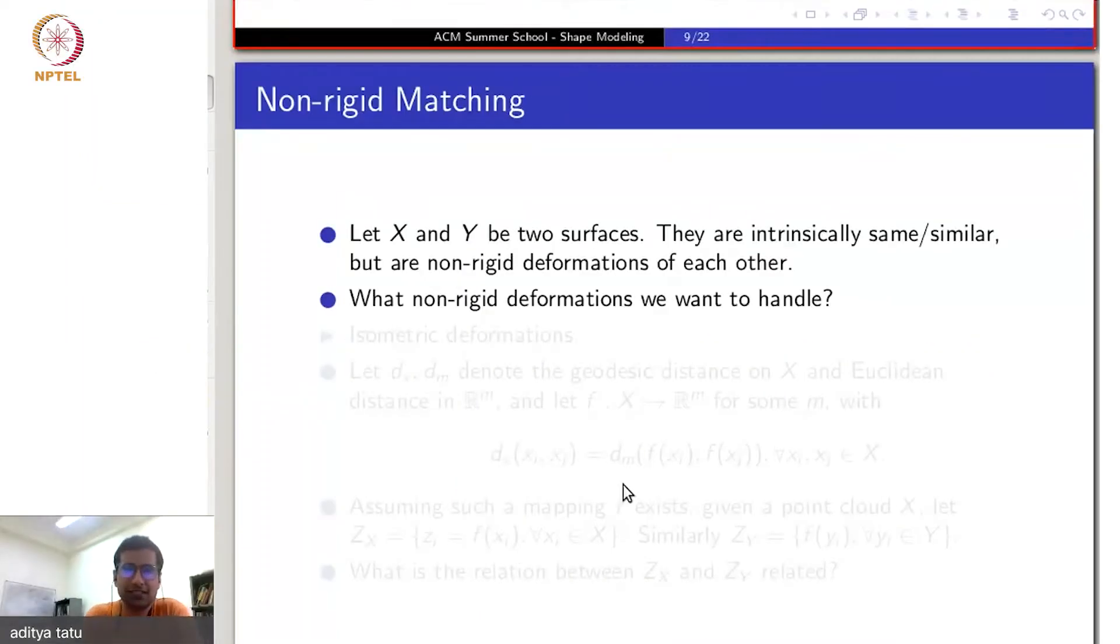So, what sort of non-rigid deformations we want to handle? As I said, just saying some transformation is non-rigid is not enough. You would want to be more specific, otherwise it's just untractable.